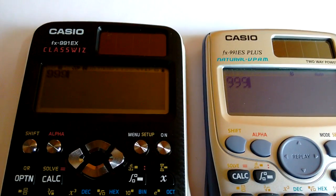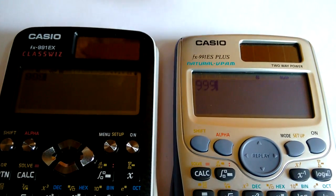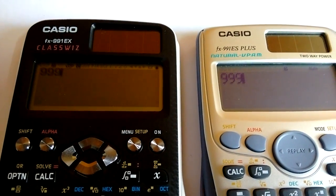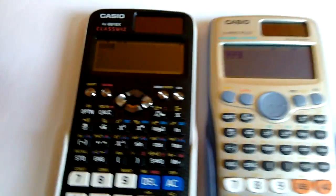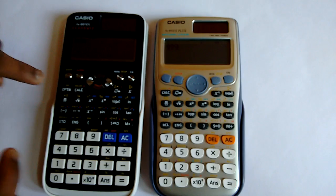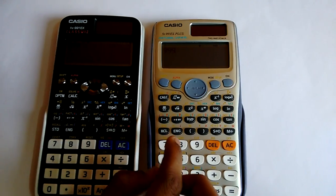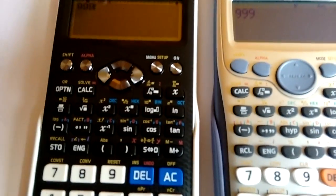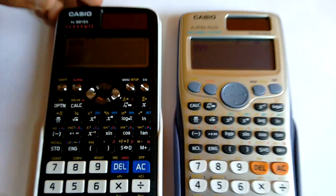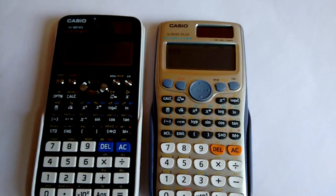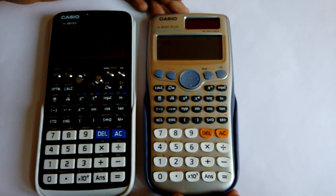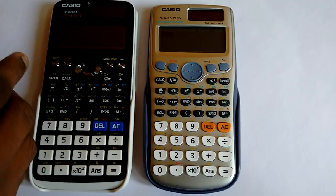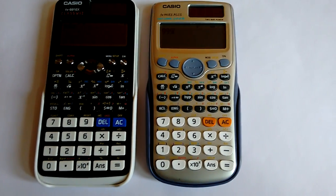It has a slightly bluish display also. I observed that in the EX version there is an option button here but in the ES Plus version there is no option button on the calculator. That is because the EX version has 552 functions and this has only 417 functions. I guess the option button is to access more functions.